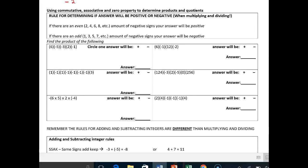The rule for determining if the answer will be positive or negative: if there are an even amount, 2, 4, 6, 8 of negatives, your answer will always be positive. If they're an odd amount, 1, 3, 5, 7, the answer will be negative.